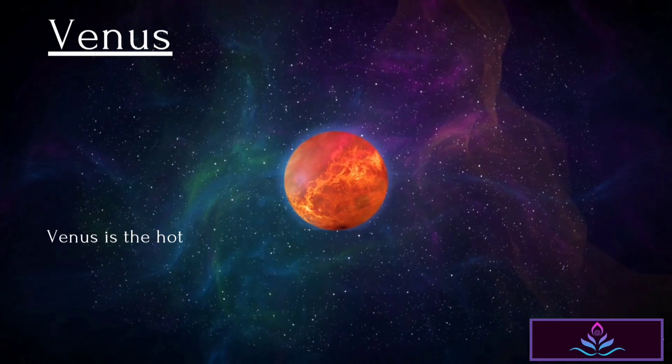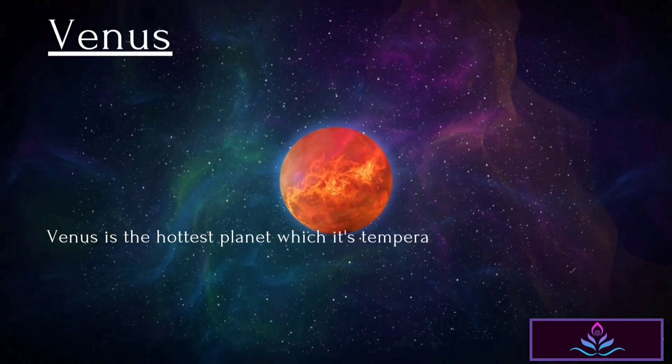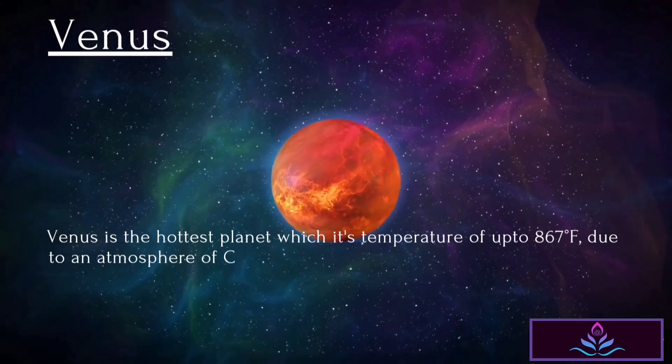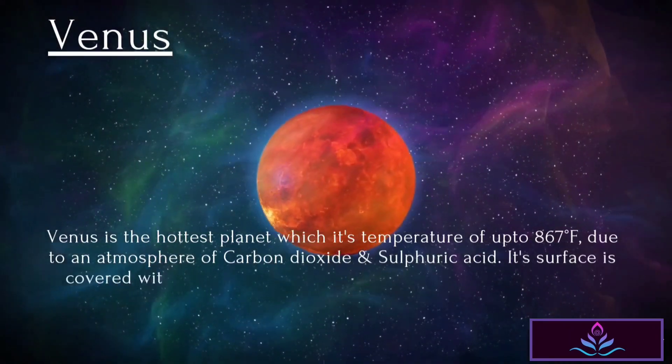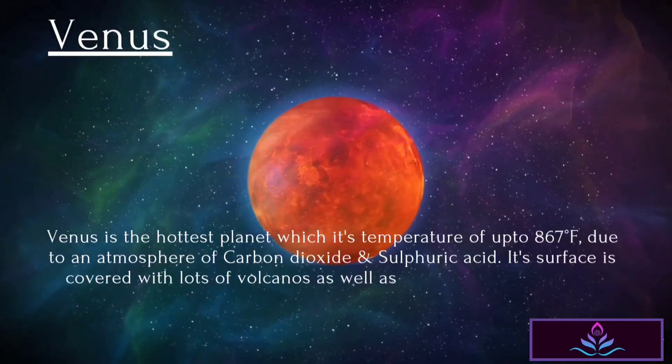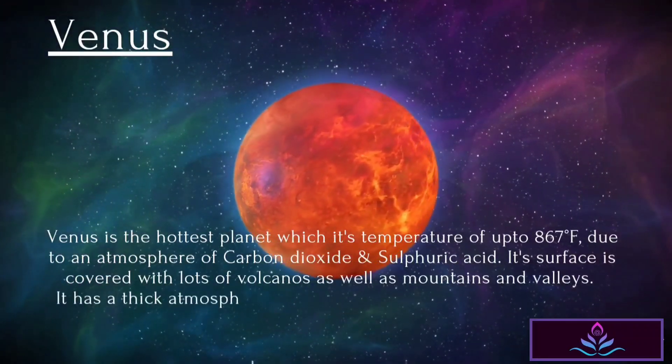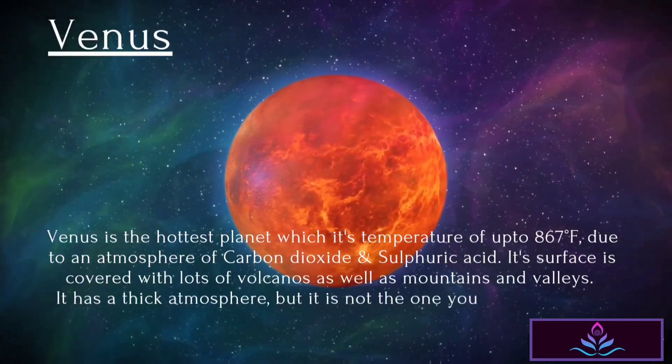Venus is the hottest planet with temperatures of up to 867 degrees Fahrenheit, due to an atmosphere of carbon dioxide and sulfuric acid. Its surface is covered with lots of volcanoes as well as mountains and valleys. It has a thick atmosphere, but it is not one you could breathe.